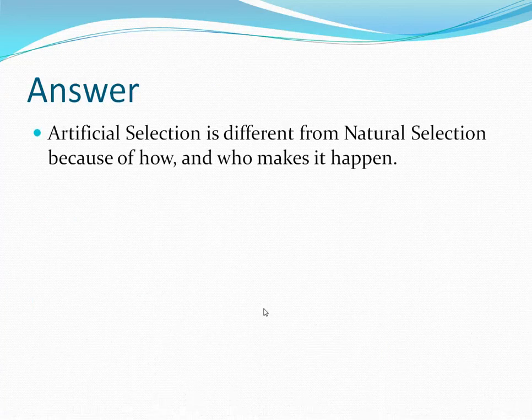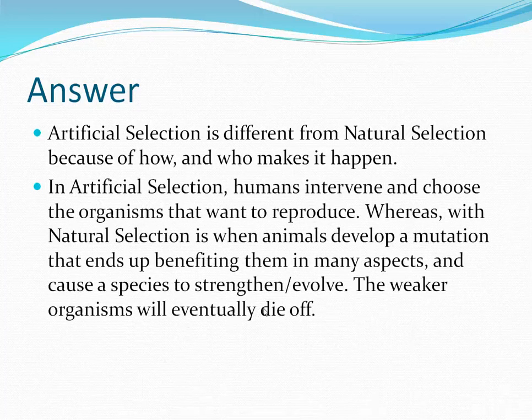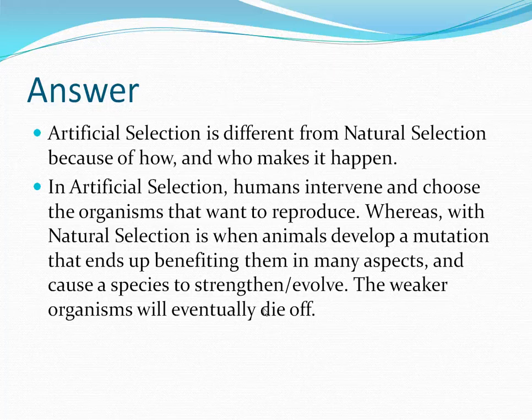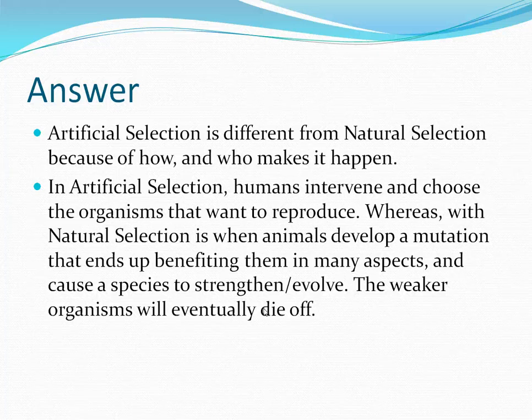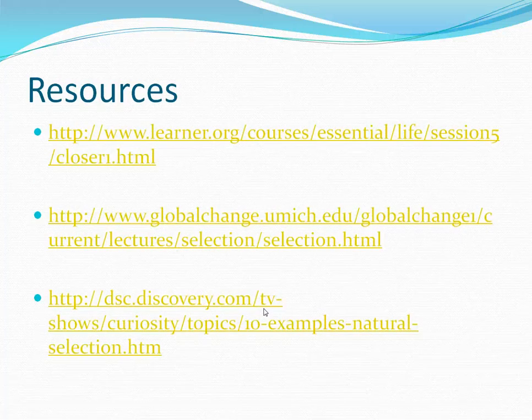My answer to my question is that artificial selection differs from natural selection in how it happens and who makes it happen. In artificial selection, humans step in to do what they want with animals, whereas in natural selection it happens within a species and they evolve over time. Artificial selection also happens faster to produce whatever you want, while natural selection takes longer. That's my presentation, and here are my resources.